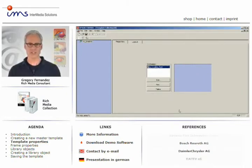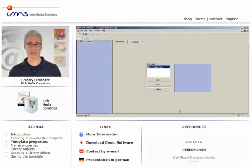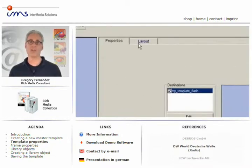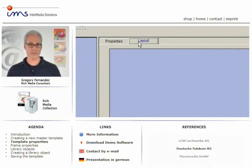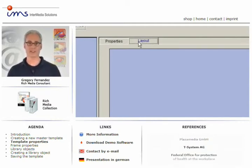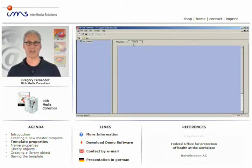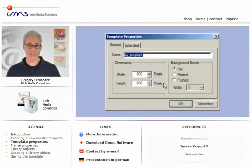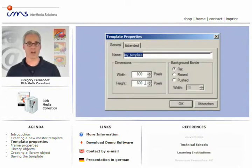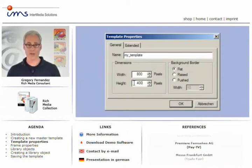Once all technical details have been set, we'll now proceed to create the layout of the template. Please click on the Layout tab. By default, Design Control will suggest a basic layout which you can modify as you like. Start with a mouse click on the blue field and select the template properties option. This will allow you to modify size, background color, and background image.